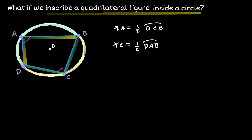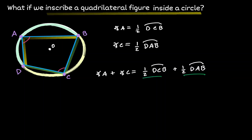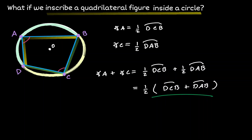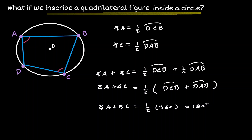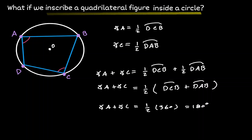Now, what would happen if we added those two angles? We would have the addition of half arc DCB and half arc DAB. We can factor out a one half, and notice that when you add these two arcs, that's the whole circle — equivalent to 360 degrees. Half of 360 is 180. What we have shown is that when we fit a quadrilateral inside a circle and consider opposite angles, those angles are going to be supplementary — their addition is equivalent to 180 degrees.